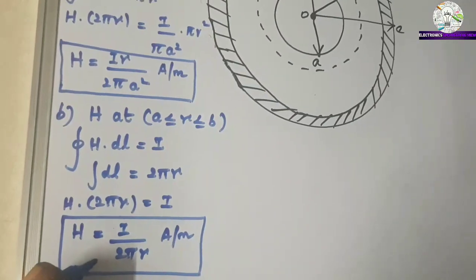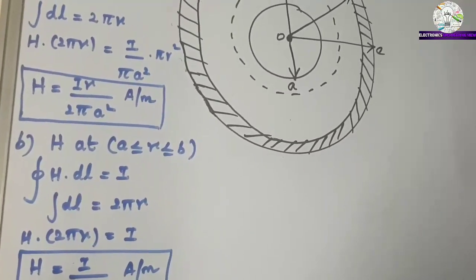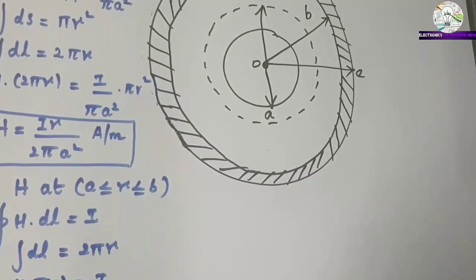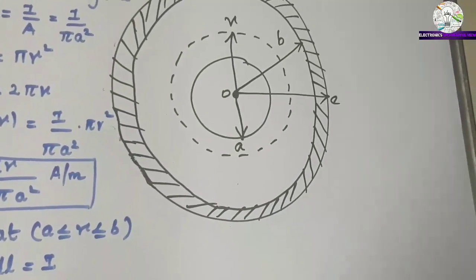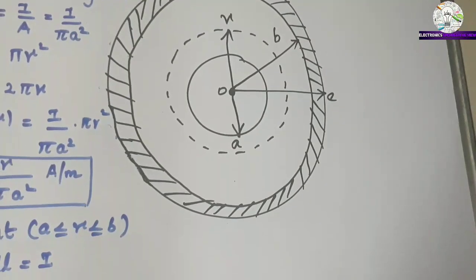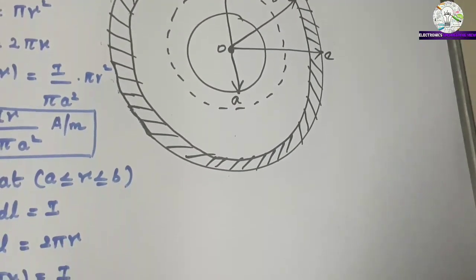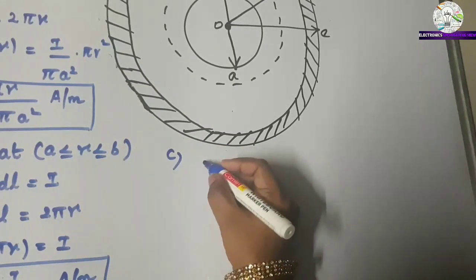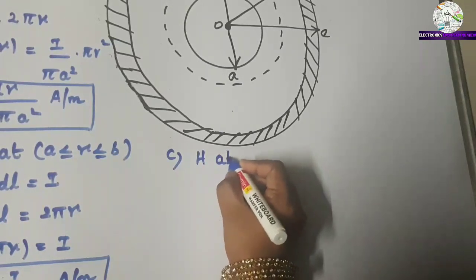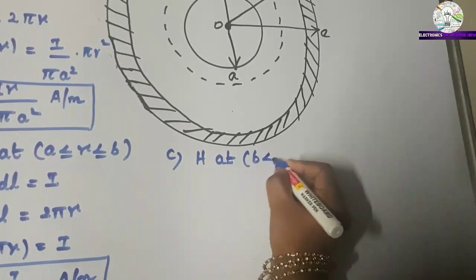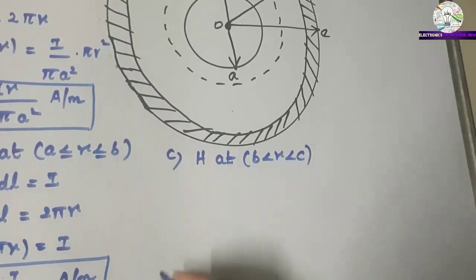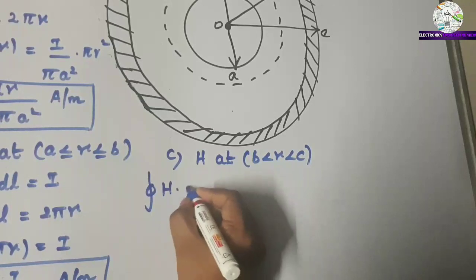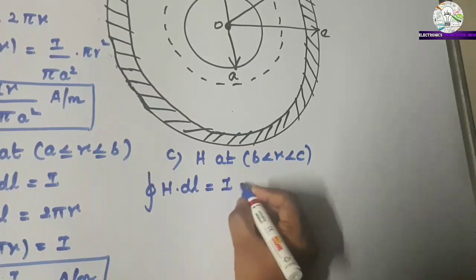Case 3: find the field intensity in the annular outer conductor, for radius B to C, that is H at B ≤ r ≤ C. By using Ampere's circuit law, the closed line integral of H dot dL equals I plus a double integral term.